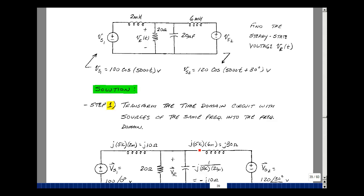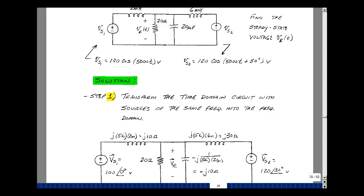For this inductance, j5,000 times the 6 millihenries is j30. For the capacitor, which is 20 microfarads, that's minus j over omega c, and that turns out to be minus j10 ohms. 100 at angle 0 for the voltage source, 120 at angle 30.